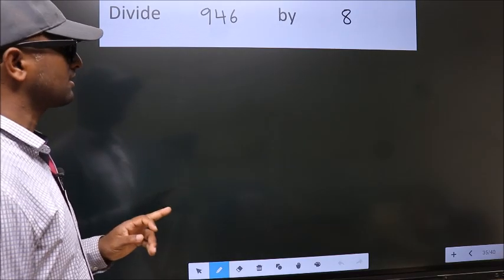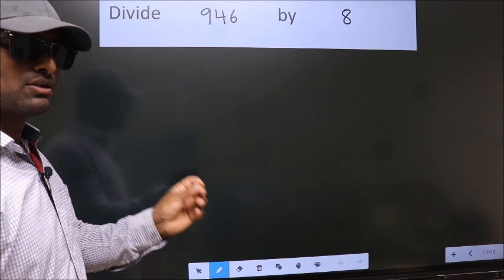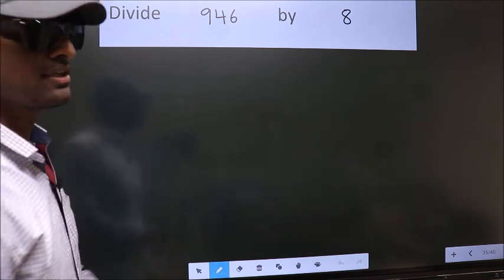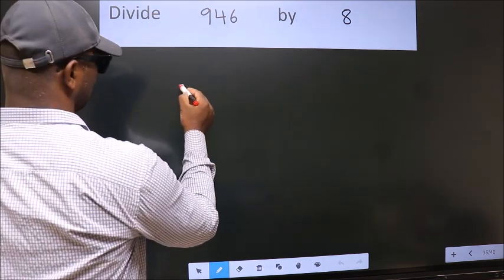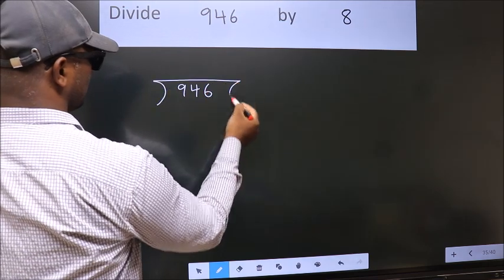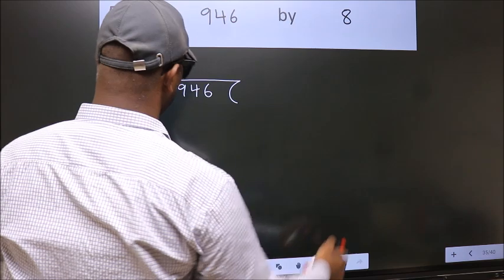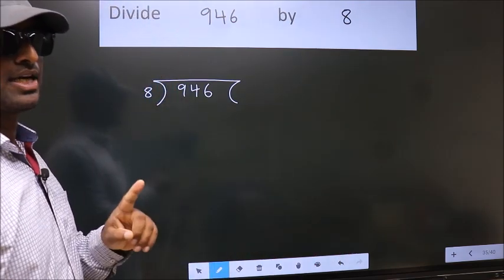Divide 946 by 8. To do this division, we should frame it in this way. 946 here, 8 here. This is your step 1.